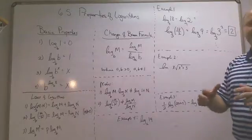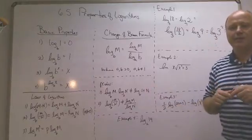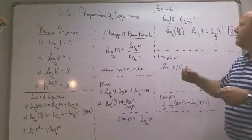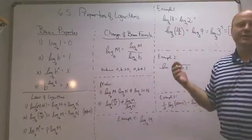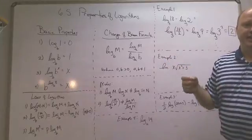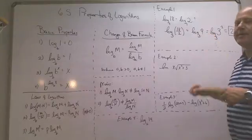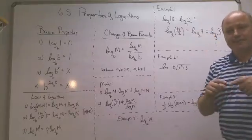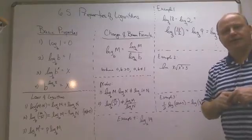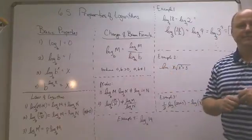If after dividing you got a number that wasn't a power of 3, then you'd be done — you couldn't simplify further without a calculator or another method. The basic property only works cleanly when the argument is a perfect power of the base. Here, 9 is 3 squared, so it works out nicely.